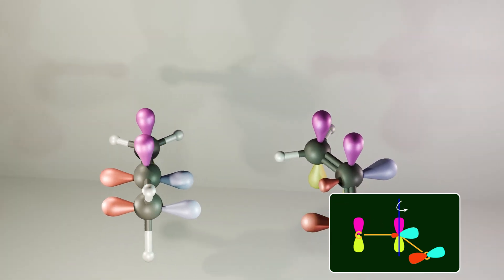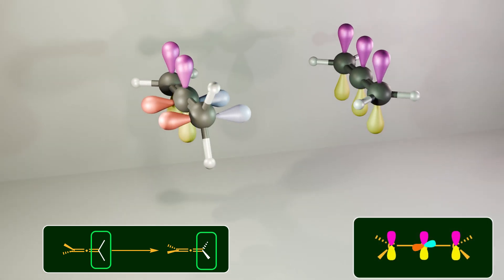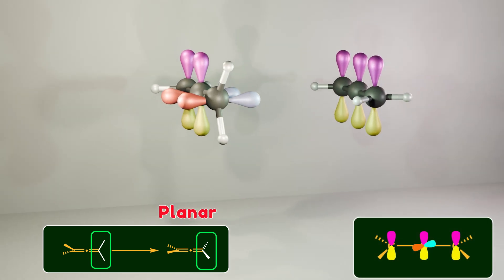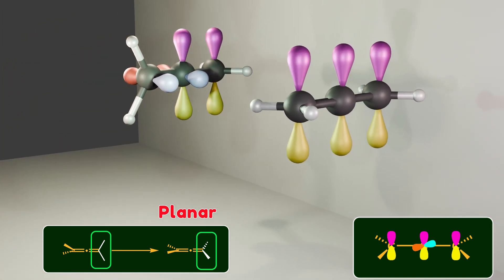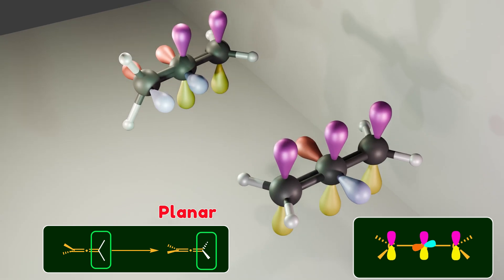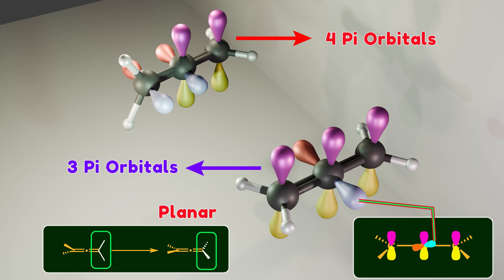This bending introduces s-character into the p orbital of the central carbon that participates in one of the pi bonds, especially the bond that lies perpendicular to the bending axis. As a result, pi overlap is reduced, weakening that particular pi bond compared to the ideal linear allene structure where maximum orbital overlap is achieved. In the second deformation, one of the terminal methylene groups twists, resulting in a more planar allene-like structure. This transformation leads to a linear arrangement of p orbitals similar to the orbital setup in allylic systems. However, one of the p orbitals at the central carbon remains non-bonding — it is perpendicular to the new pi system. In linear allenes, four p orbitals interact to form two perpendicular pi bonds, but in the twisted form, only three p orbitals contribute to the formation of two planar pi bonds, leaving one orbital non-bonding.